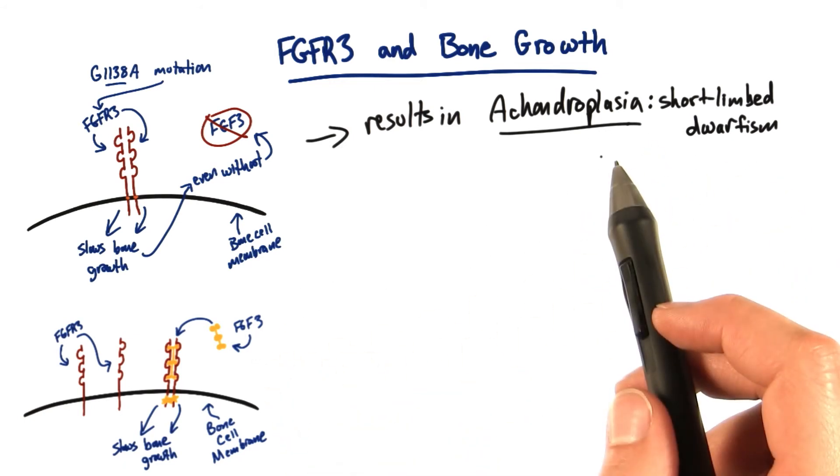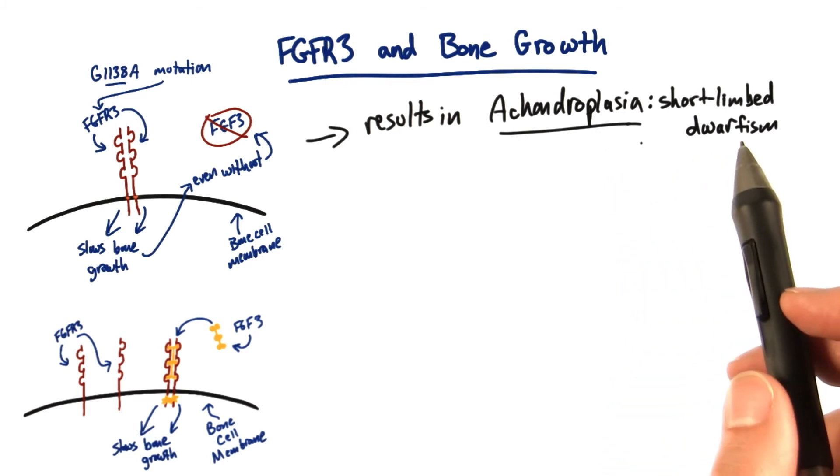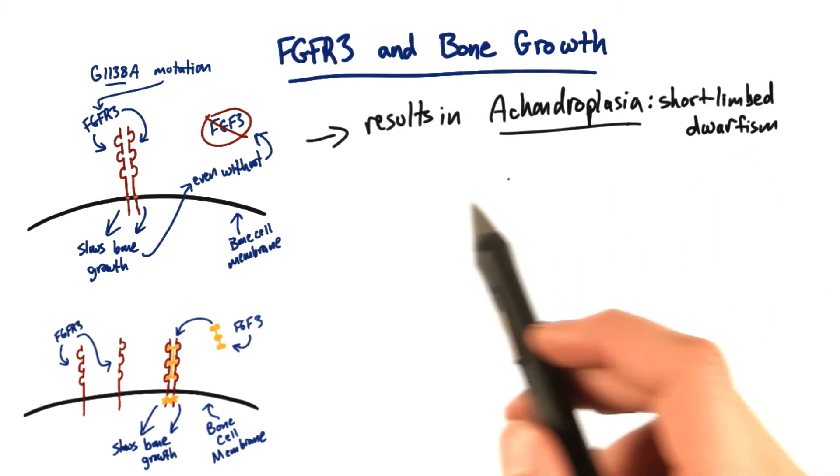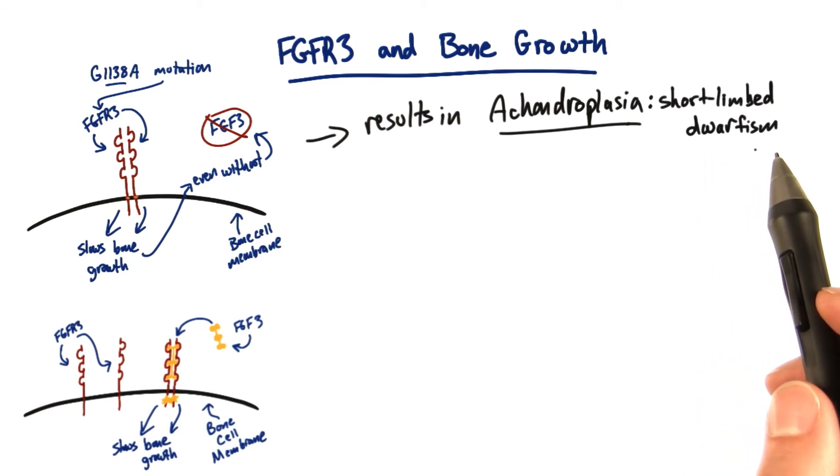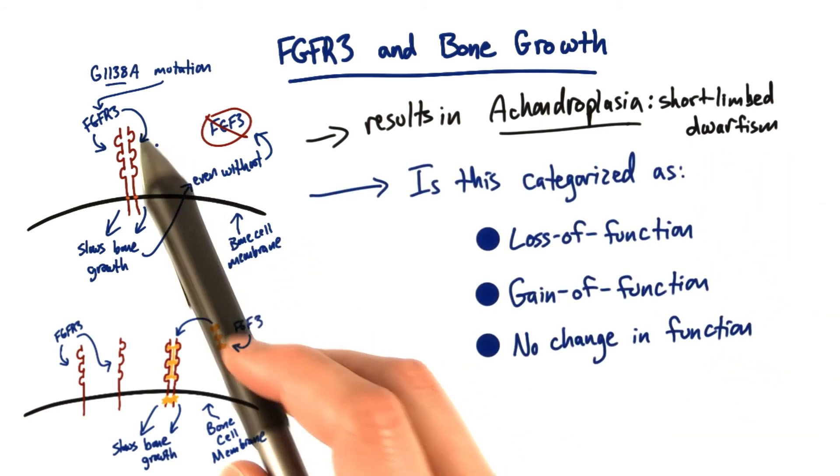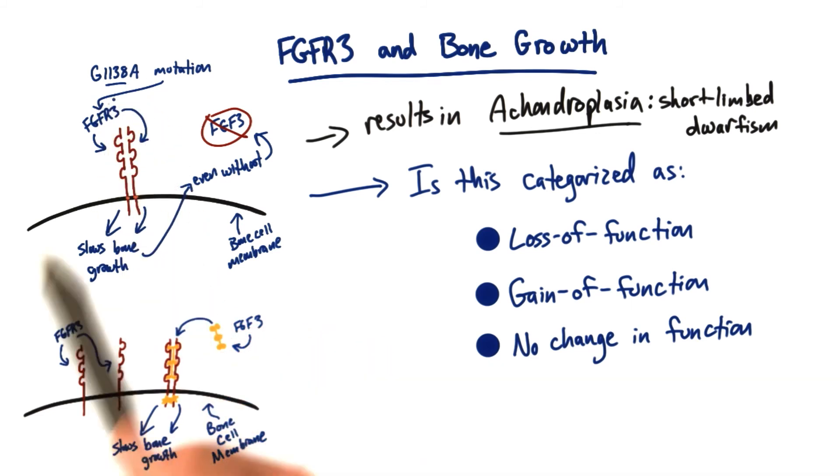A person with achondroplasia will have shorter limbs and overall be a shorter person with a distinctive facial structure due to altered bone development of the skull. Would you categorize this allele, the G1138A allele, as a loss of function, gain of function, or no change in function allele?